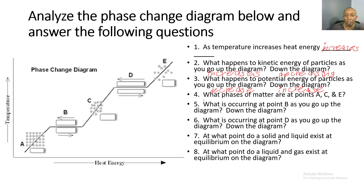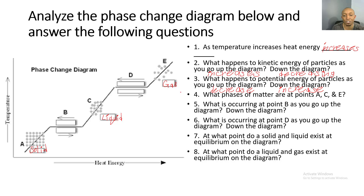Number four: what phases of matter are at points A, C, and E? At point A we have a solid — particles are tightly packed and vibrating in place. At point C the particles are slightly farther apart, so we have a liquid — no definite shape but a definite volume. At point E the particles are very spread apart, so this would be a gas — no definite volume nor definite shape.